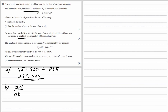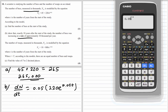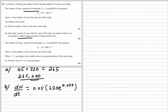We multiply by the power differentiated, which is 0.05, so it's 0.05 times 220 e^(0.05t). And 0.05 times 220 is 11, so dn/dt = 11e^(0.05t).